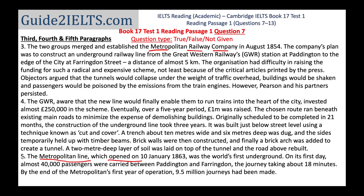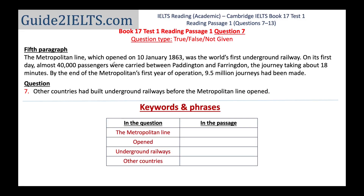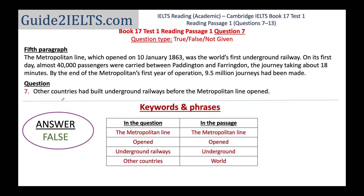Now that I have a tentative location, I go back and read the question again: 'Other countries had built underground railways before the metropolitan line opened.' If the passage says underground railways had been built in other countries before, the answer is true. If not, false. If we can't be sure, not given. We get our answer from the very first sentence of the fifth paragraph: 'The metropolitan line was the world's first underground railway.' Because it was the first in the world, obviously no other country had built one before. The answer is false.